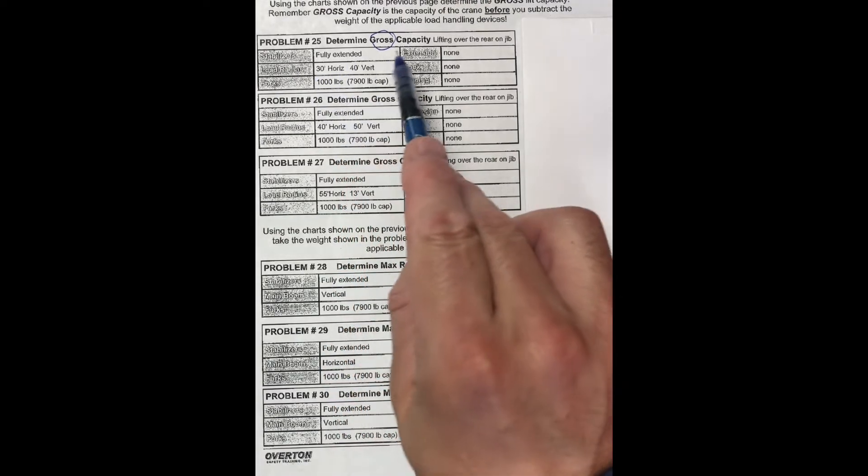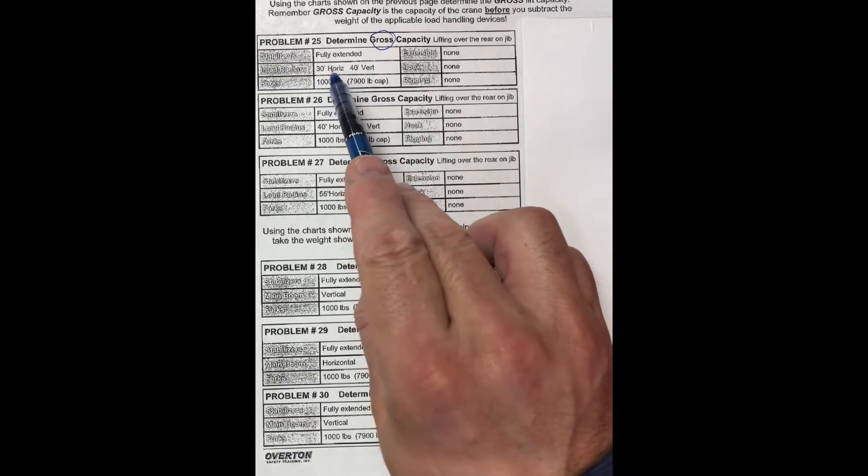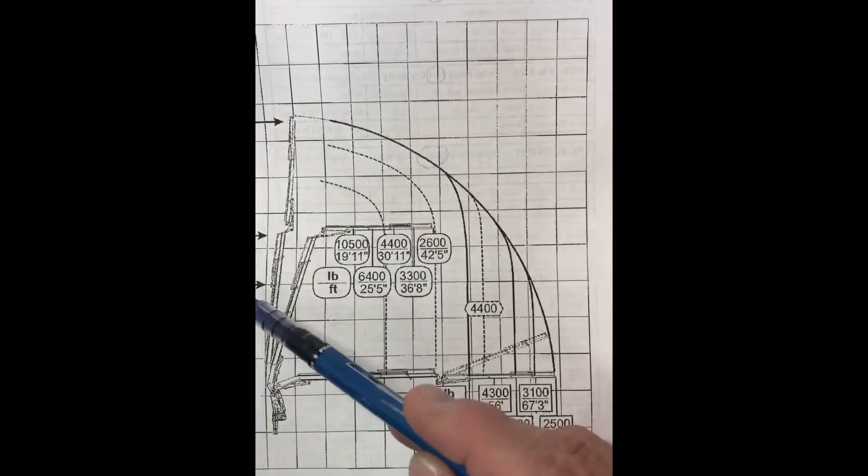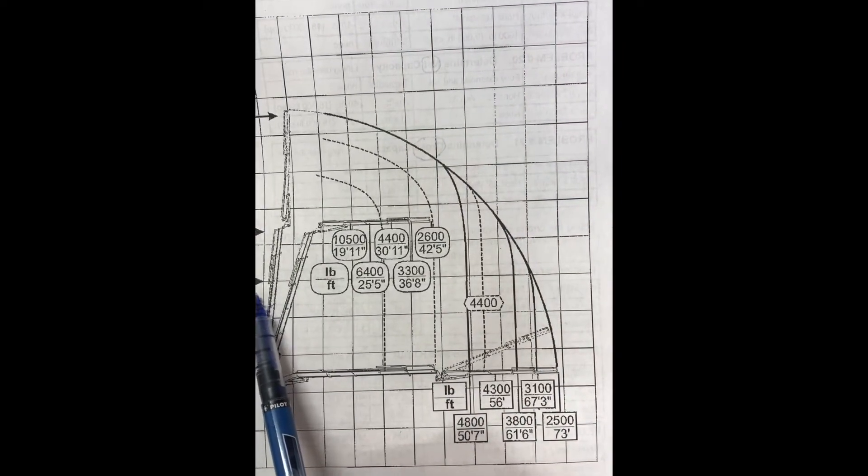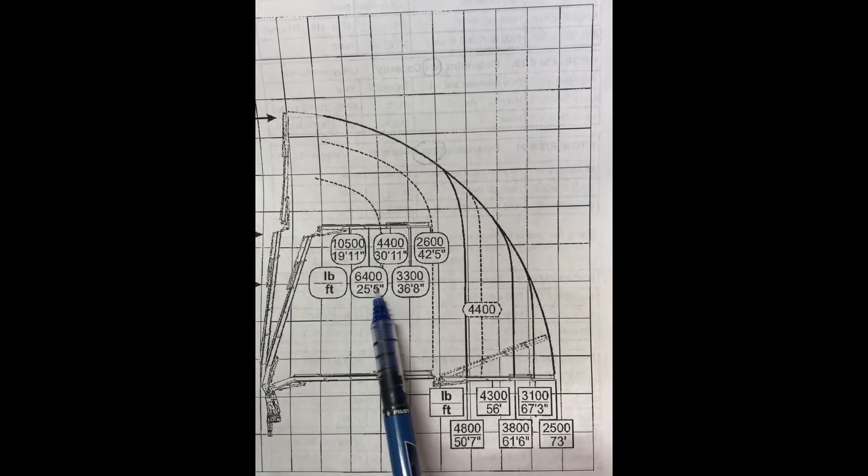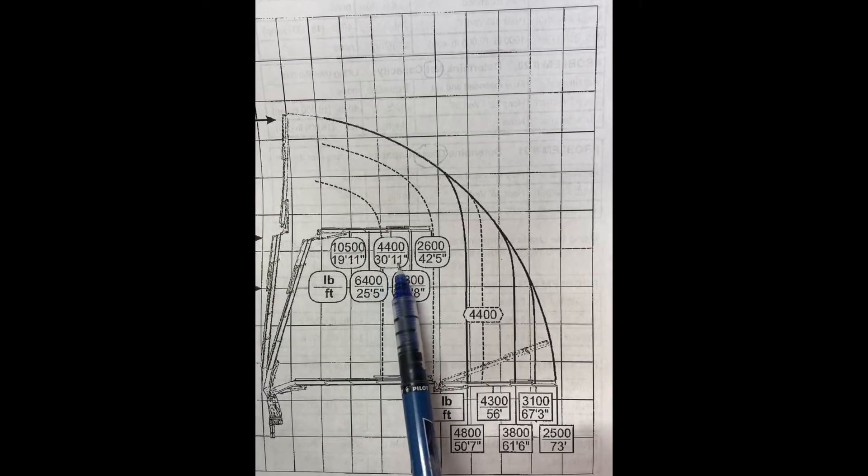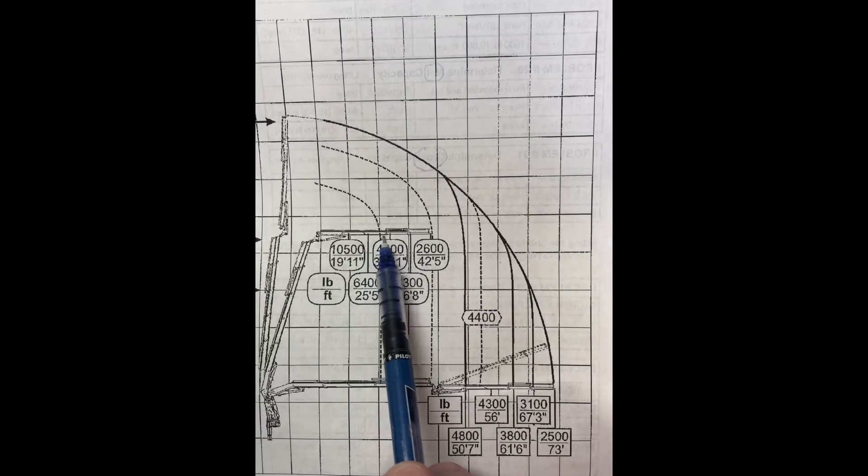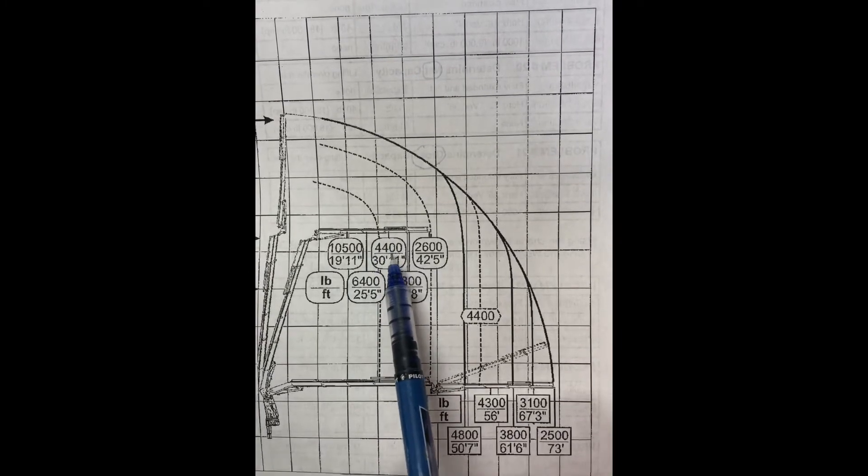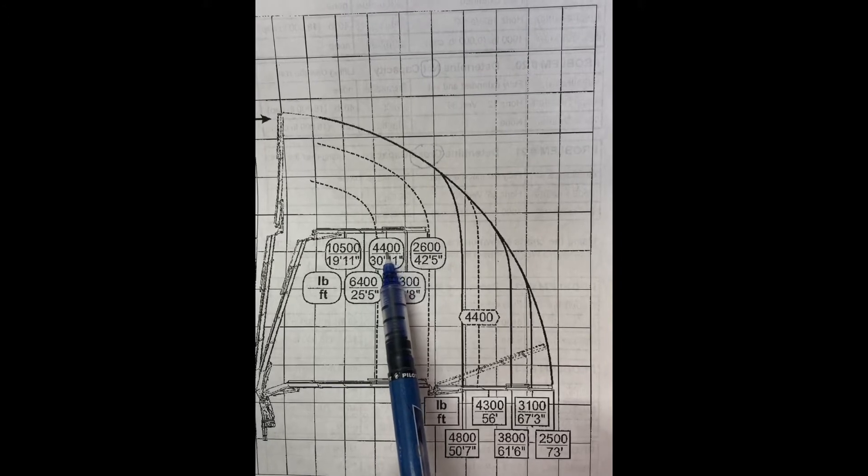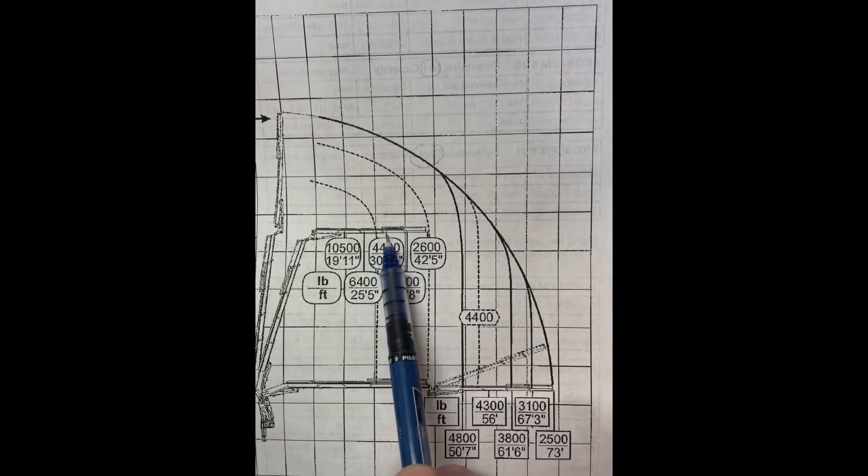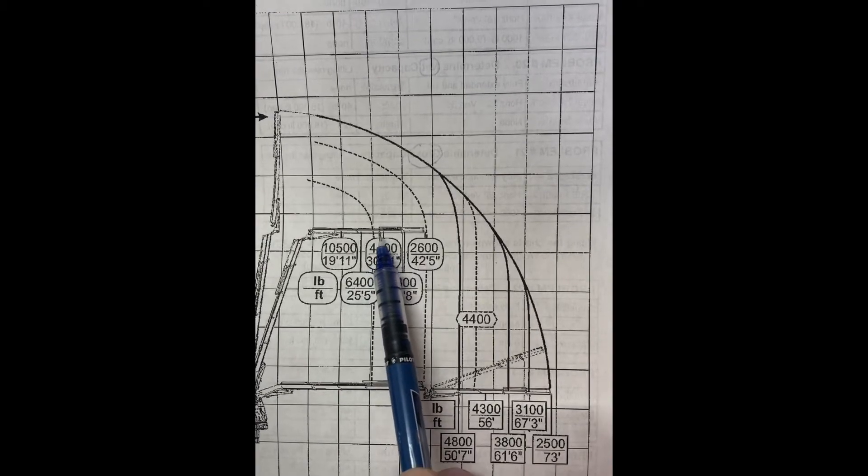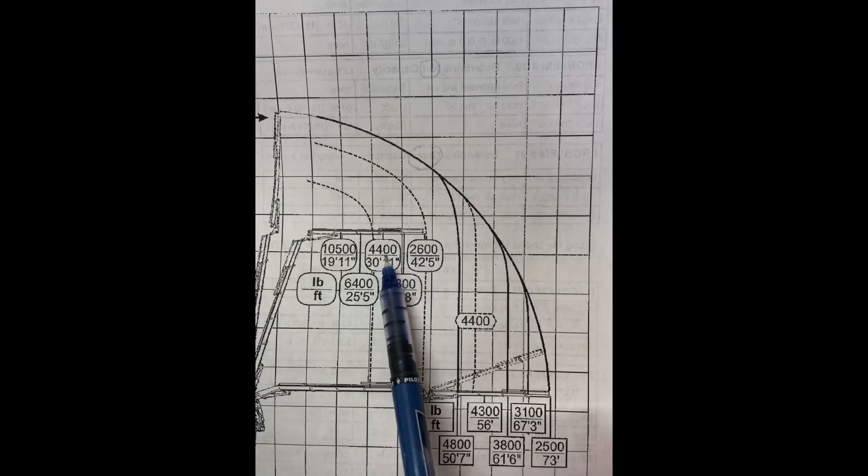Here we're just looking for gross capacity. 30 foot horizontal, 40 foot vertical. Here's our 40 foot vertical. Now we need 30 foot horizontal. So 30 foot's going to be in between this 30 foot 11 and 25 and a half feet. It's going to be in that zone. If we're looking at our gross capacity, we can do 4,400 pounds out to here. So it's below. It's in this zone. So 4,400 pounds is our gross capacity.